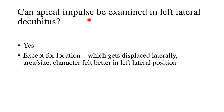Can the apical impulse be examined in the left lateral decubitus position? Yes. However, location of the apical impulse should be assessed in the supine position only, because it gets displaced laterally when the patient turns to their left side. Other features such as the area, size, and character of the apical impulse can be felt better in the left lateral position. For example, characters like hyperkinetic apical impulse, tapping impulse seen in mitral stenosis, or sustained impulse seen in LVH, aortic stenosis, or LV dysfunction are all better appreciated laterally.